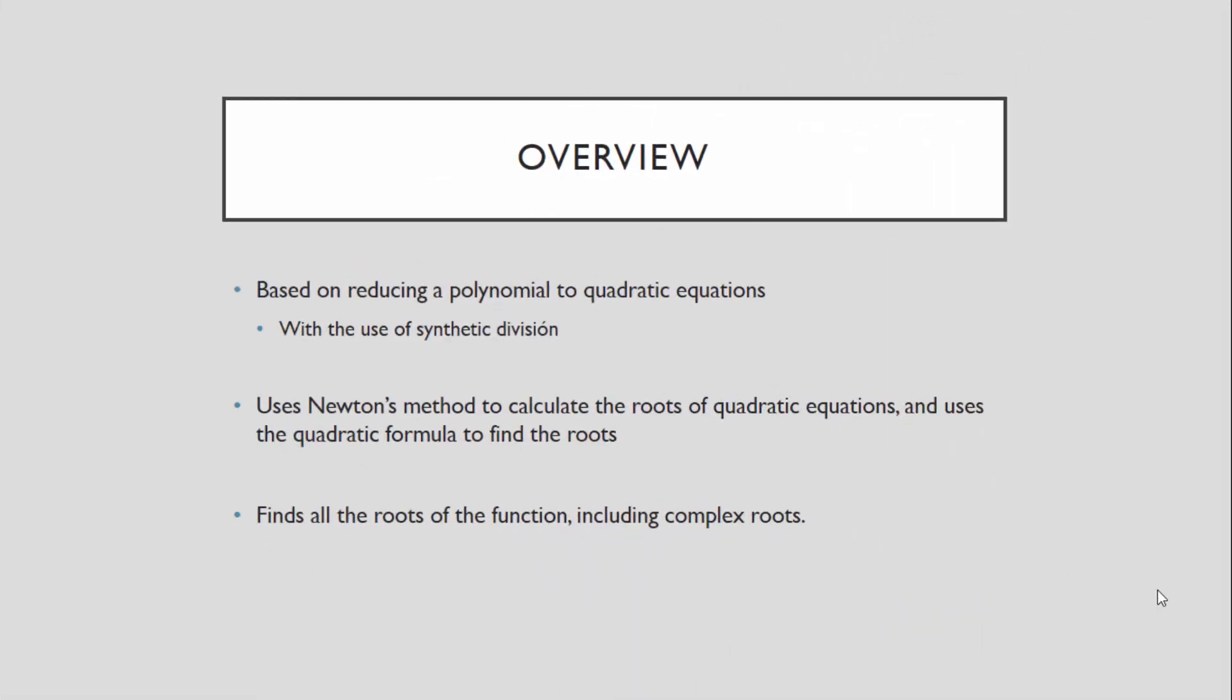A general overview for this method would be that it is based on reducing any polynomial to quadratic equations. For example, if we would have x to the 5, we would reduce it to x squared times x squared times x. We would reduce it by using synthetic division. It also uses Newton's method to calculate the roots of quadratic equations and uses the quadratic formula to find these roots. And it also finds all the roots of the functions, including complex roots.